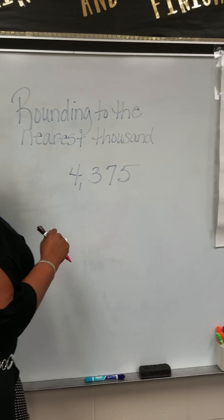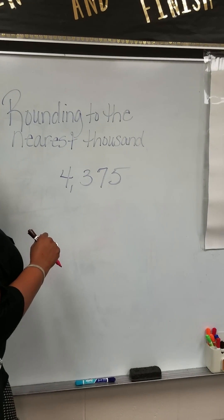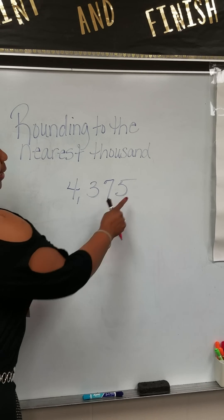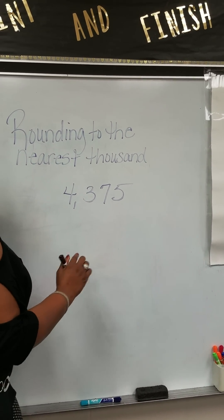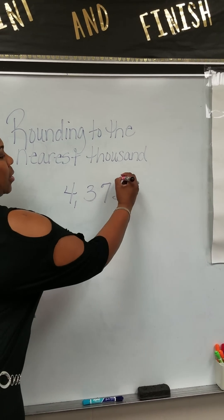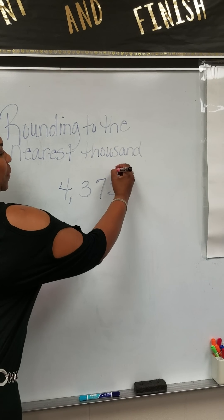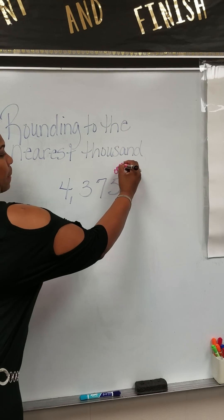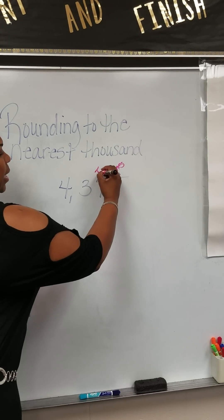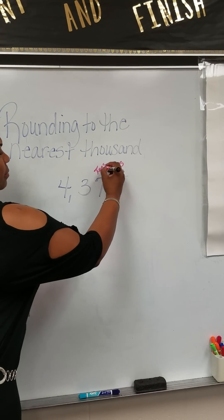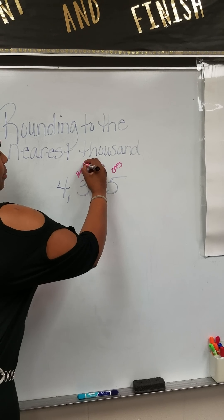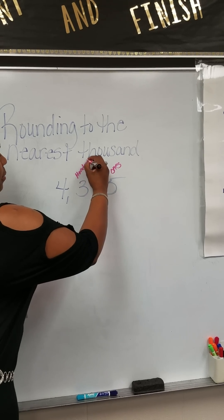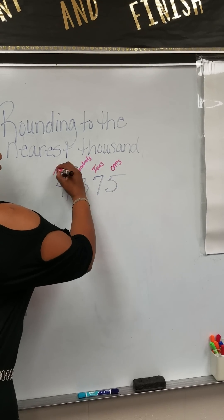Today we're rounding to the nearest thousand. But before we get started, let's label our place value slots. So this is the ones place, tens, hundreds, thousands.